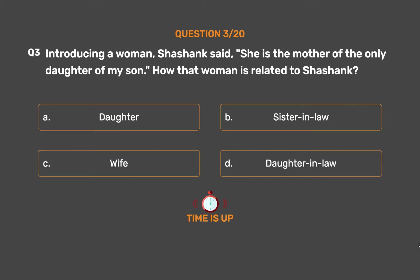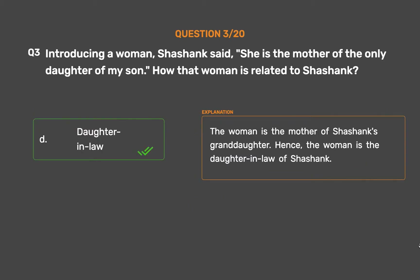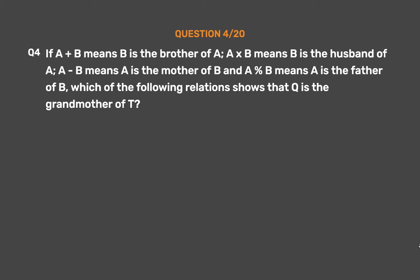The correct answer is Option D: Daughter-in-law. The woman is the mother of Shashank's granddaughter. Hence, the woman is the daughter-in-law of Shashank.